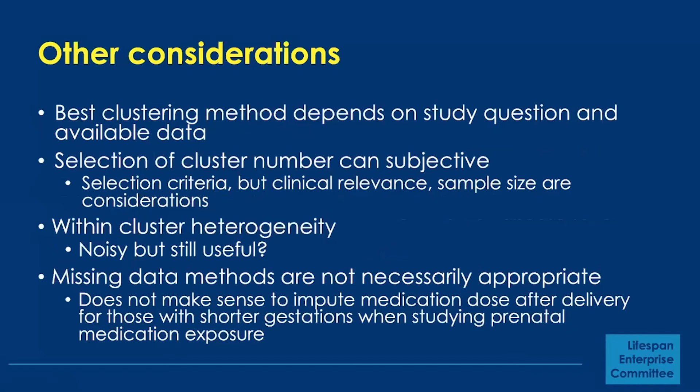Some other considerations for investigators: there are several different clustering approaches, and I haven't covered all of them. Investigators would have to pick one or a few to conduct a study. The best clustering method really depends on the study question and available data, and that's an area where more research is needed. The selection of cluster number can be subjective — while I mentioned some selection criteria, clinical relevance of clusters, trajectory shapes, and sample size are also important. For example, if a trajectory group contains only five individuals out of 5,000, it might not be clinically relevant.